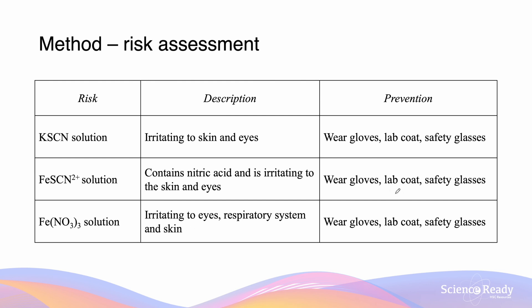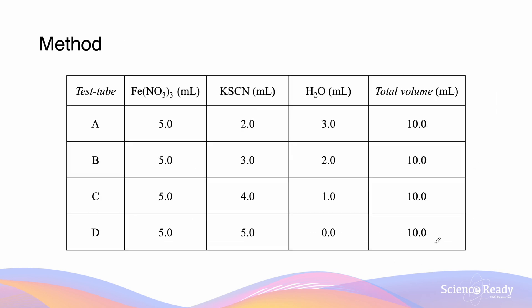The way we can prevent these hazards is by ensuring that we wear the appropriate protective equipment. In our method, we will also be making four solutions by mixing various volumes of iron nitrate, potassium thiocyanate, and water to a total volume of 10 mL. The reason we do this is so that we have four different absorption values which we can analyze to determine the concentration at equilibrium.